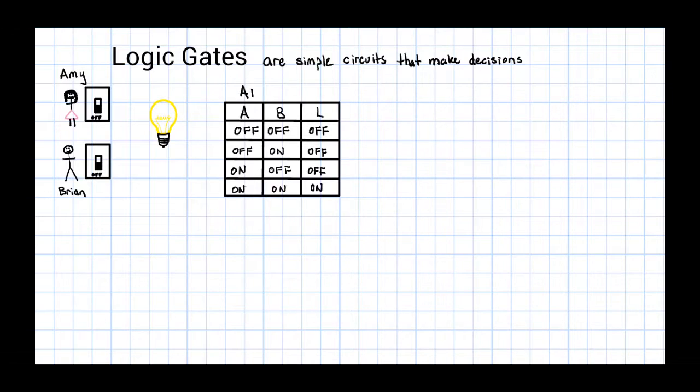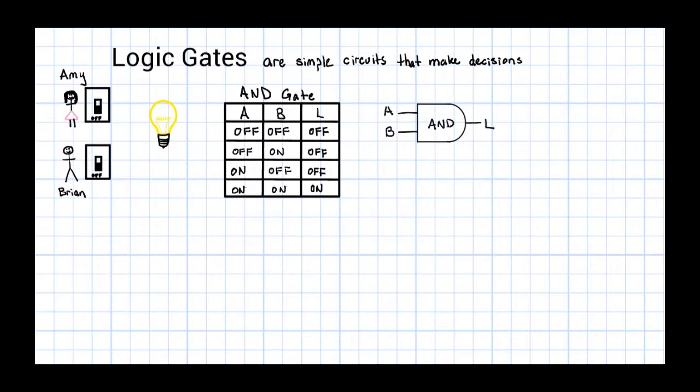Did you notice how I used the word AND? The situation I just described is called an AND logic gate. The light bulb will be off all the time unless both Amy and Brian have their switches on. Here's the symbol we use when we want to draw an AND gate.